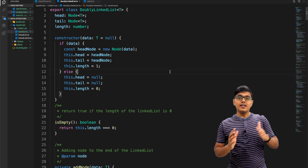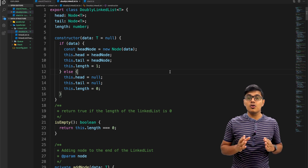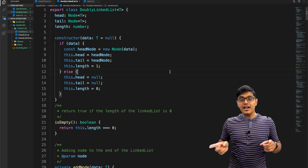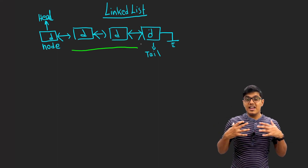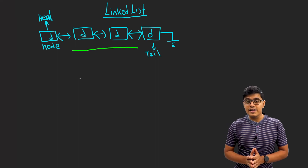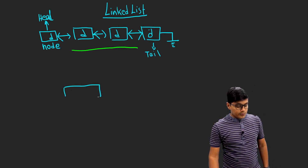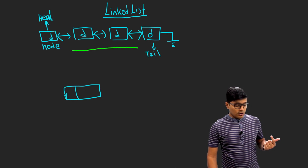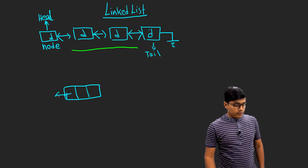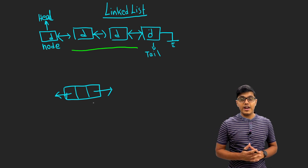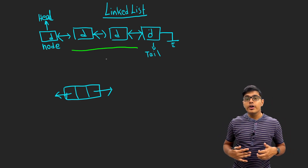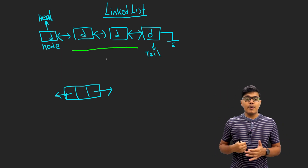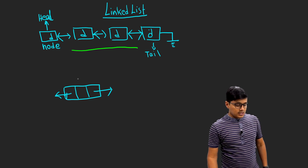The main difference between single linked list and double linked list is that double linked list will have two pointers — to the next node and the previous node. Here in this diagram you can see a representation of a double linked list. A node will have three blocks: one for the previous pointer, one for the data, and one for the next pointer. This first node is the head.